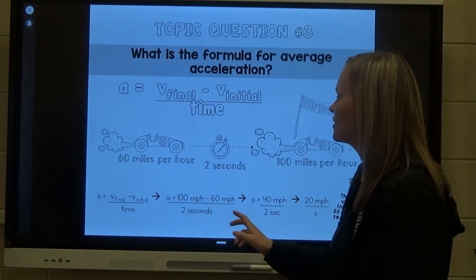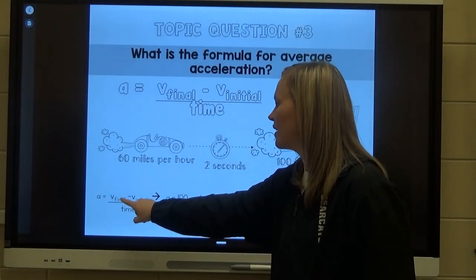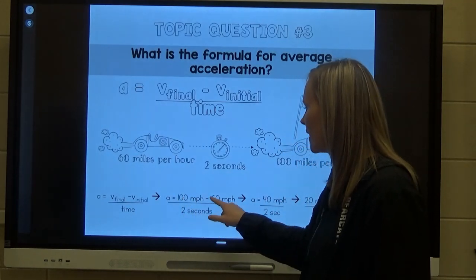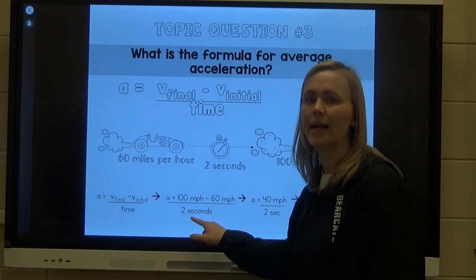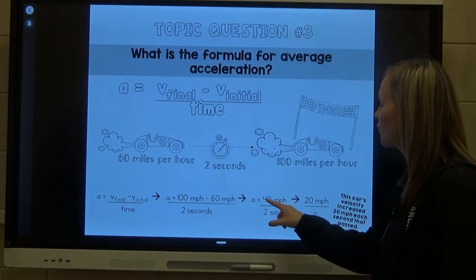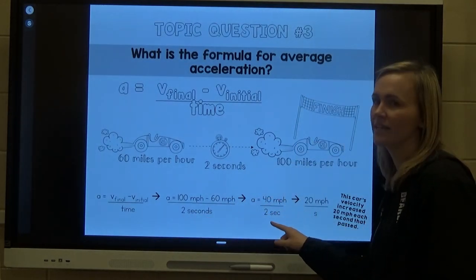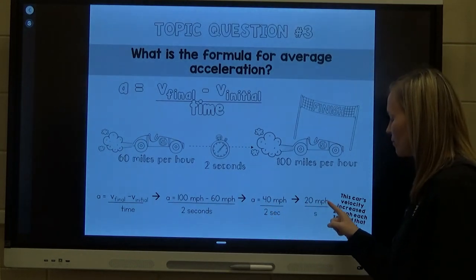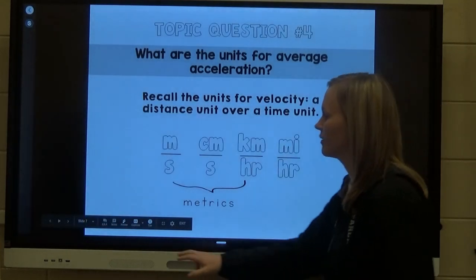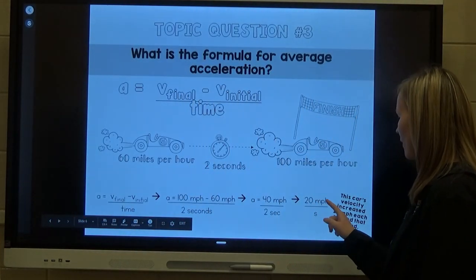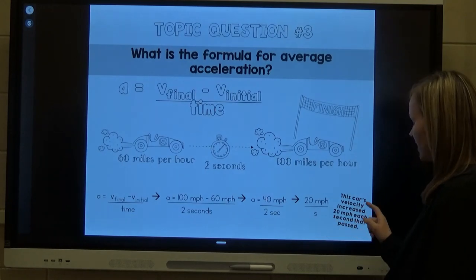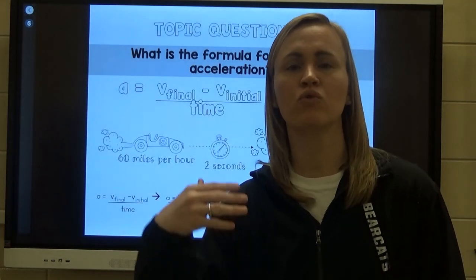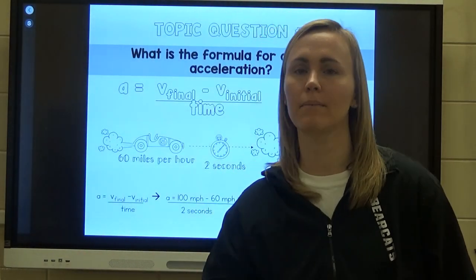Acceleration equals 100 miles per hour minus 60 miles per hour, divided by two seconds. That gives us 40 miles per hour divided by 2 seconds, which equals 20 miles per hour per second. So the car's velocity is increasing 20 miles per hour each second — as each second passes, that car is going 20 miles per hour faster than it was the second before.